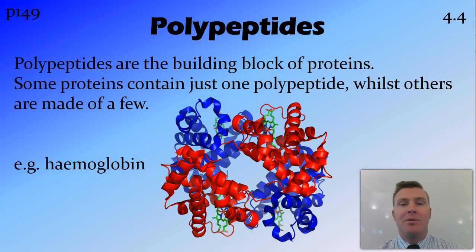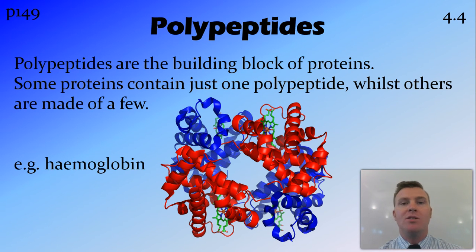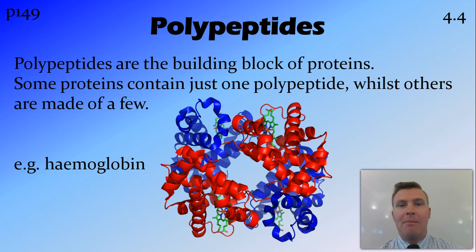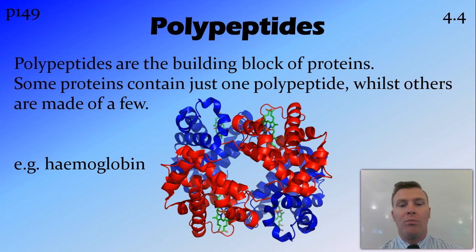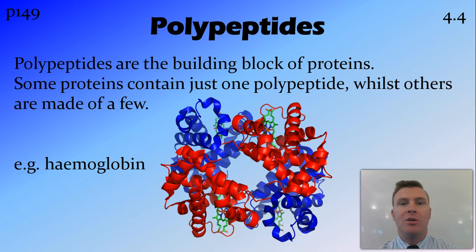As I said, they're the building blocks of proteins. Some proteins are just one polypeptide, whilst most others are made by a couple of polypeptides. One example of a protein is hemoglobin that we've looked at, and it is made of four polypeptides. You can see those four polypeptides here, where two are in blue and two are in red.